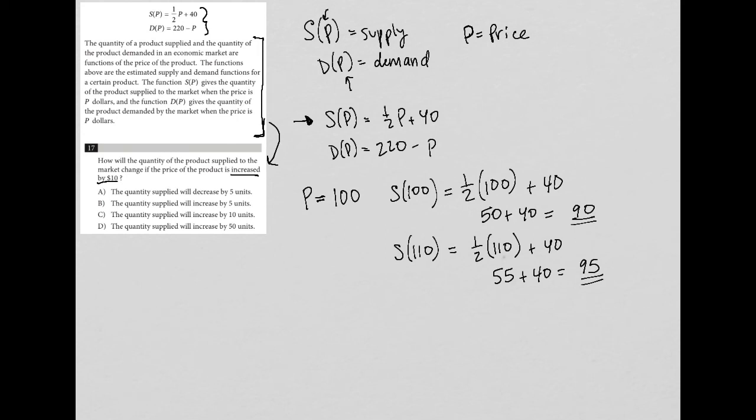Let's check out the answer choices. The quantity supplied will decrease by 5 units—definitely not seeing a decrease here. I'm sorry, I said $5, but this is units, right? Because this is S of P. So it went up 5 units of supply.